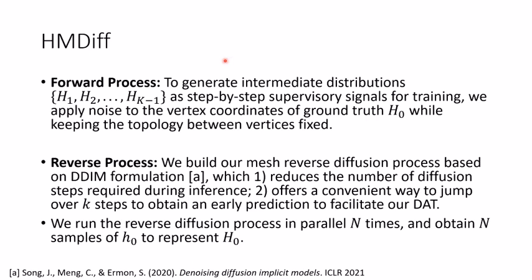Next, we discuss some of the details of our HMDIF framework. Overall, the HMDIF framework consists of two processes: the forward process and the reverse process. In the forward process, to generate intermediate distributions as step-by-step supervisor signals for training, we apply noise to the vertex coordinates of the ground truth H0, while keeping the topology between the vertices fixed. We build our mesh reverse diffusion process based on the DDIM formulation, which reduces the number of diffusion steps required during inference, and also offers a convenient way to jump over k steps to obtain an early prediction to facilitate our DAT. Using this mesh reverse diffusion process, we progressively denoise the input distribution HK into the target distribution H0. We run the reverse diffusion process in parallel n times and obtain n samples of H0 to represent the distribution.